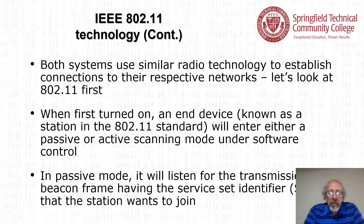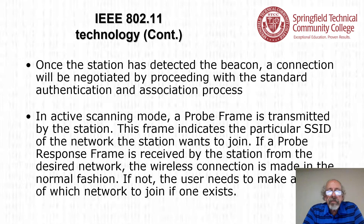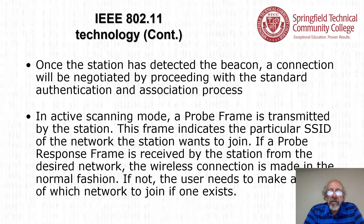Let's look at 802.11 first. When first turned on, an end device — known as a station in the 802.11 standard — will enter either a passive or active scanning mode under software control. In passive mode, it will listen for the transmission of a beacon frame having the service set identifier, or SSID, that the station wants to join. Once the station detects the beacon, a connection is negotiated through the standard authentication and association process. In active scanning mode, a probe frame is transmitted by the station indicating the particular SSID of the network it wants to join. If a probe response frame is received from the desired network, the wireless connection is made in a normal fashion.